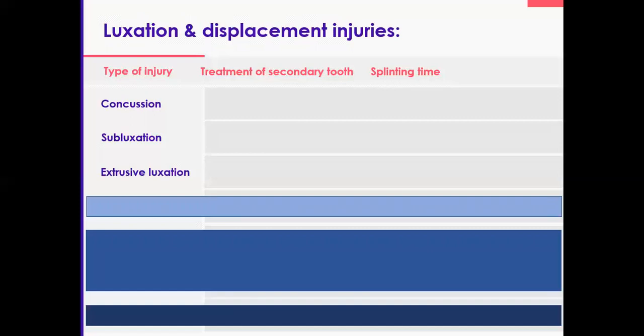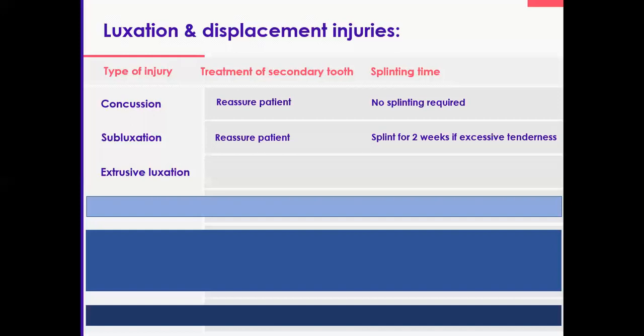To sum up: for concussions, reassure the patient and monitor the tooth. For subluxation, reassure and splint for two weeks if very tender, then monitor. For extrusions, reassure, reposition properly, confirm with a radiograph, check the bite, and place a flexible splint for two weeks. Reassure the patient with regards to discoloration.